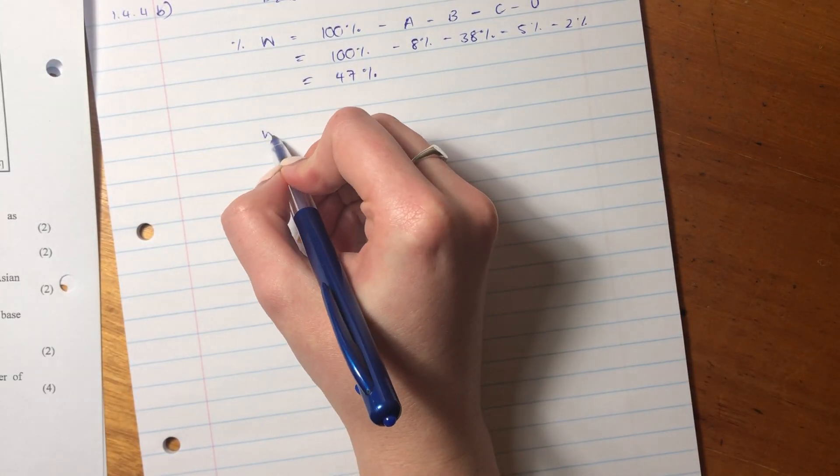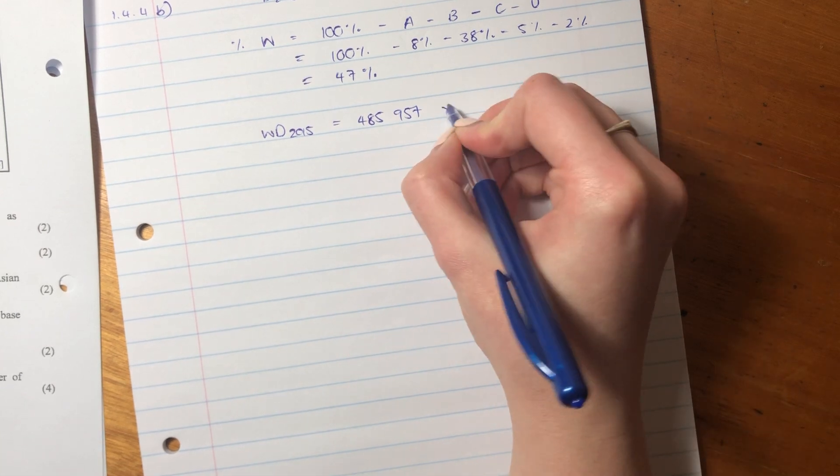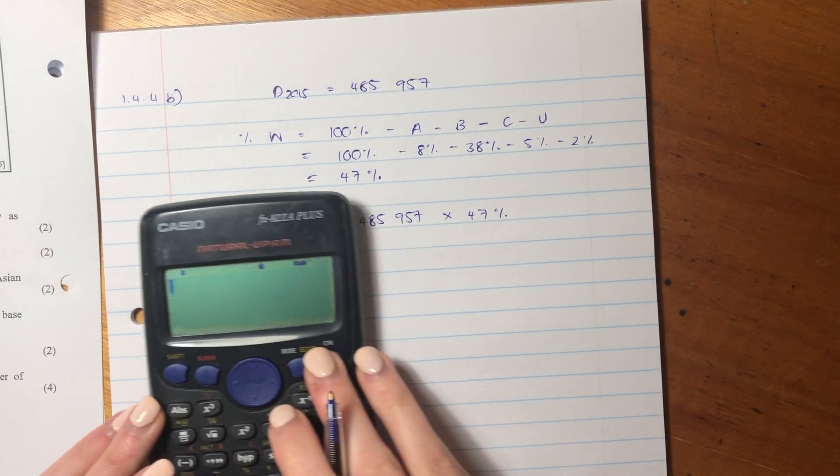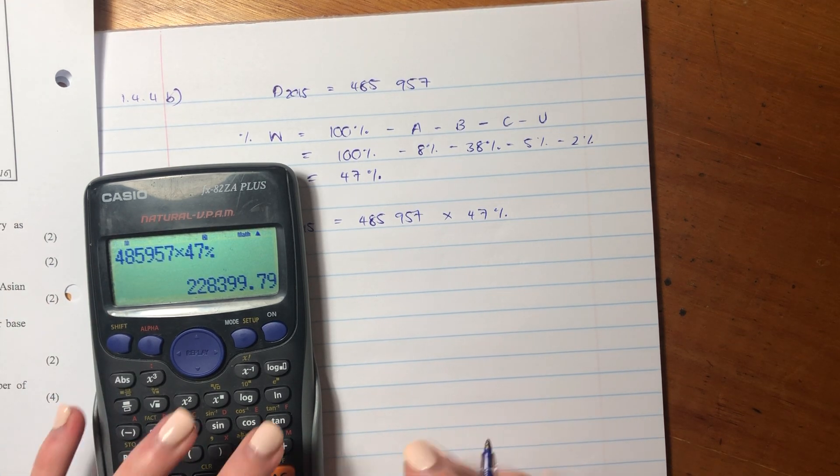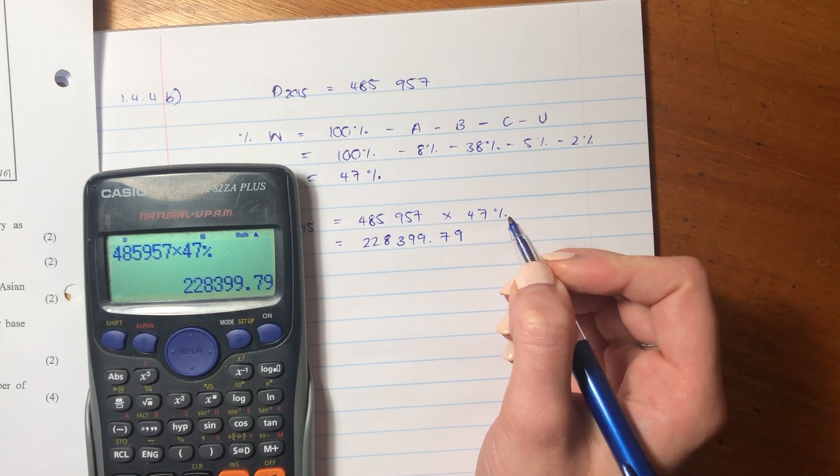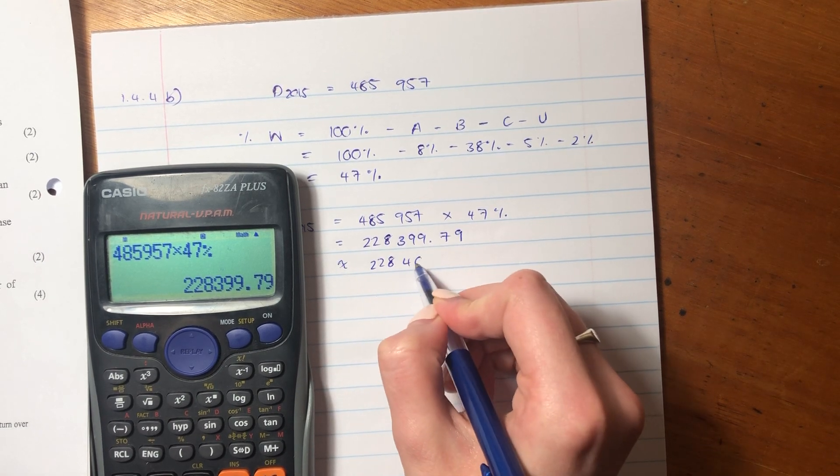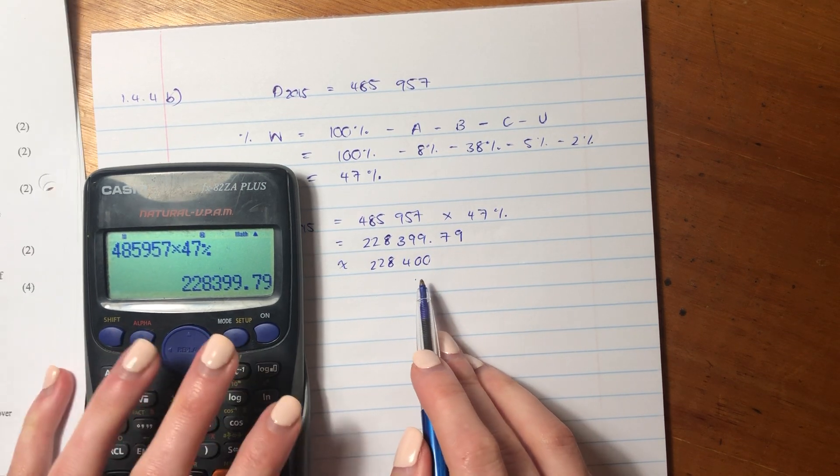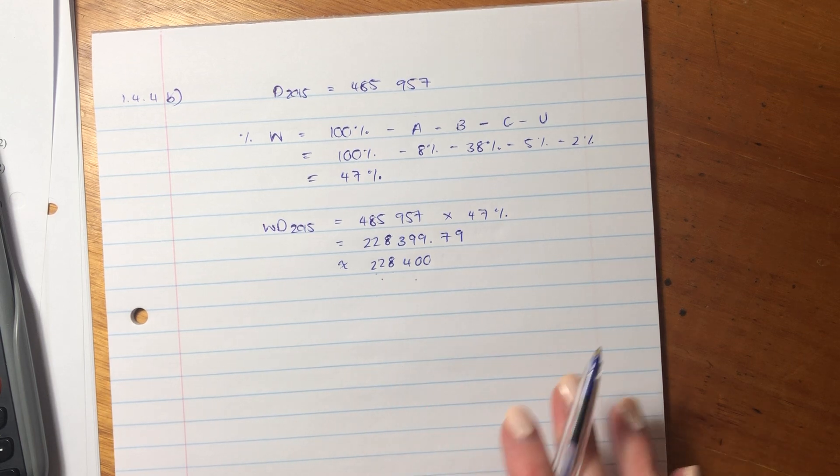So 47% of the donors in 2015 are white people. So we then say white donors 2015 is the total number of donors times by the percentage that are white. So 485,957 times 47%. And that gives us 228,399.79. And what does it ask us to do? Round off to the nearest 10. Well that's handy because the nearest 10 is this. So if you round this off, you'll see that it actually rounds off to the nearest 10 already. So the number of donors that were white in 2015 is 228,400.